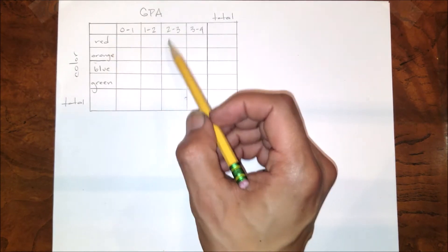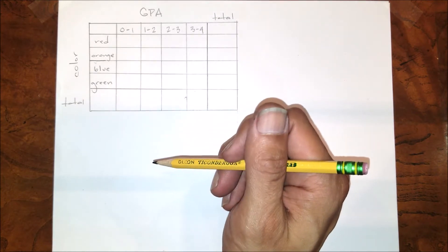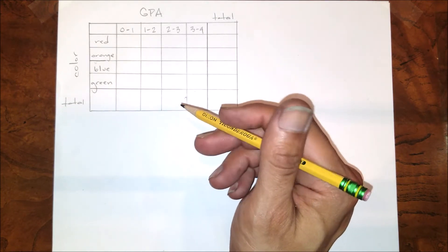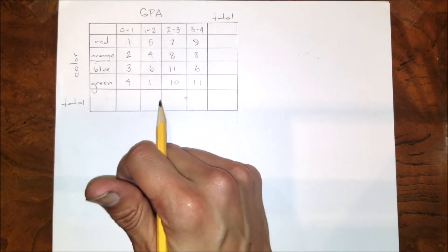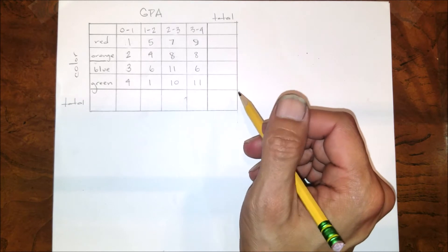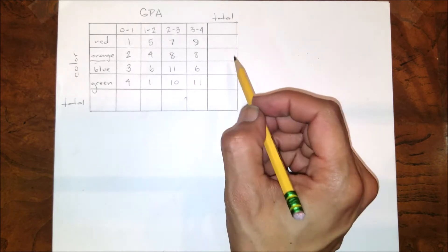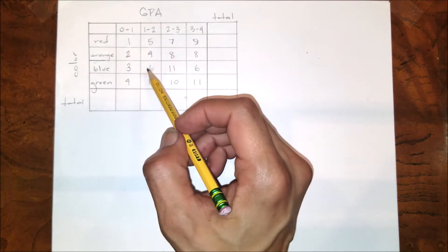Let's go ahead and populate these cells. There we go, so these are my survey results. As you can see, I had nine people with a GPA between three and four whose favorite color was red, and so on and so forth. Let me go and get some totals in here.